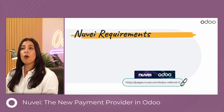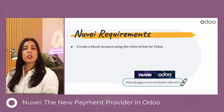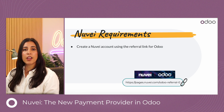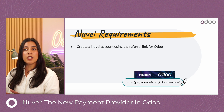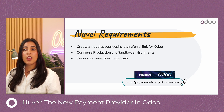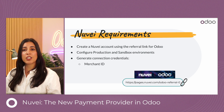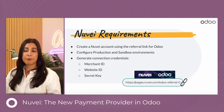In Nuve, you need to create a Nuve account using the referral link for Odoo — that's the referral link shown on this screen. Then you need to configure production and sandbox environments and generate the connection credentials. These include the merchant ID, the website ID, and the secret key.